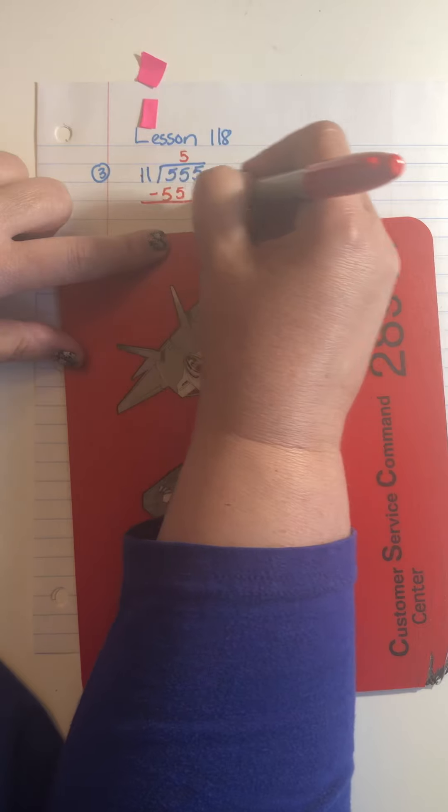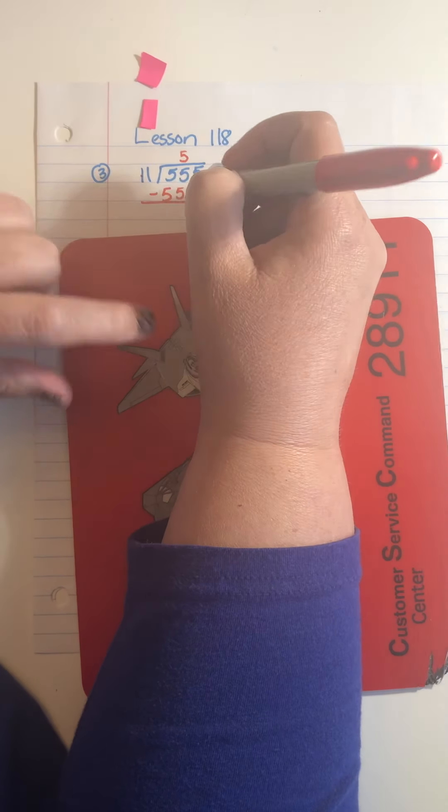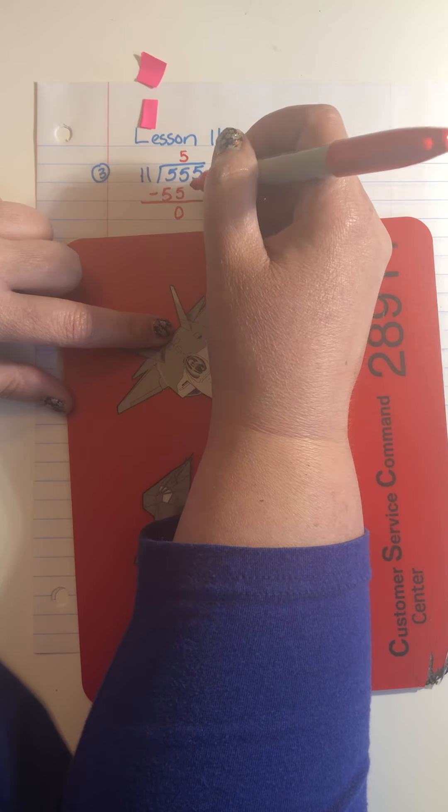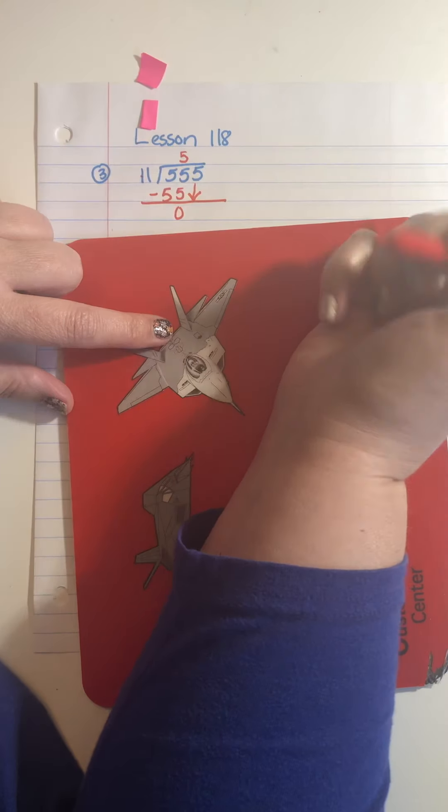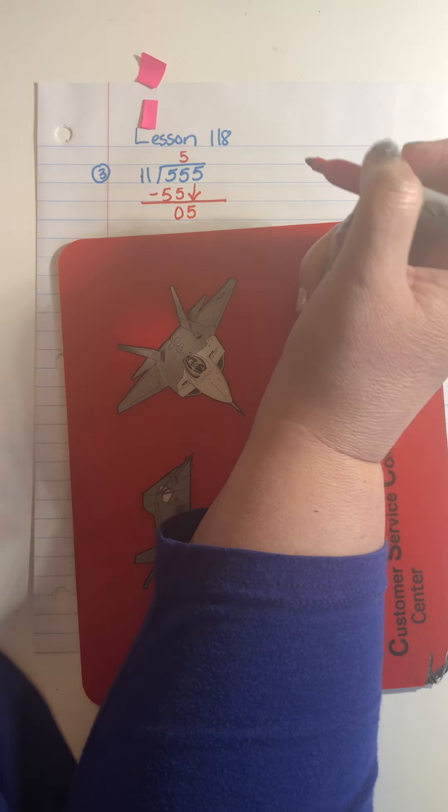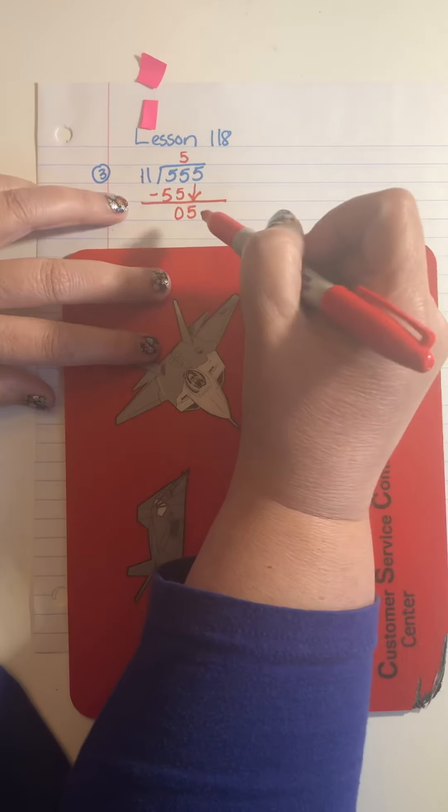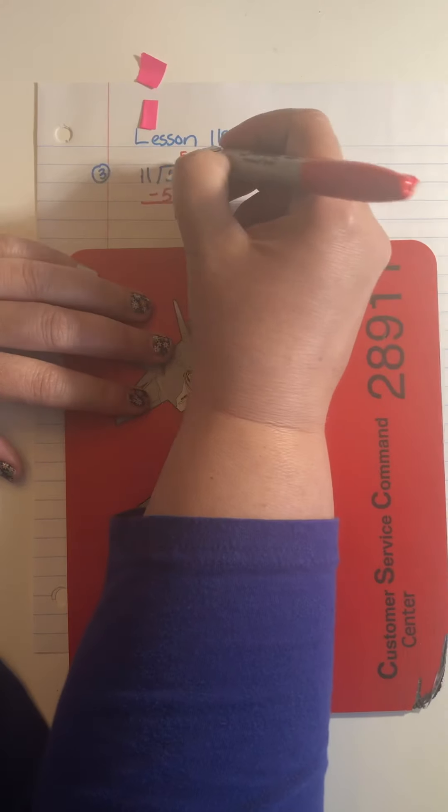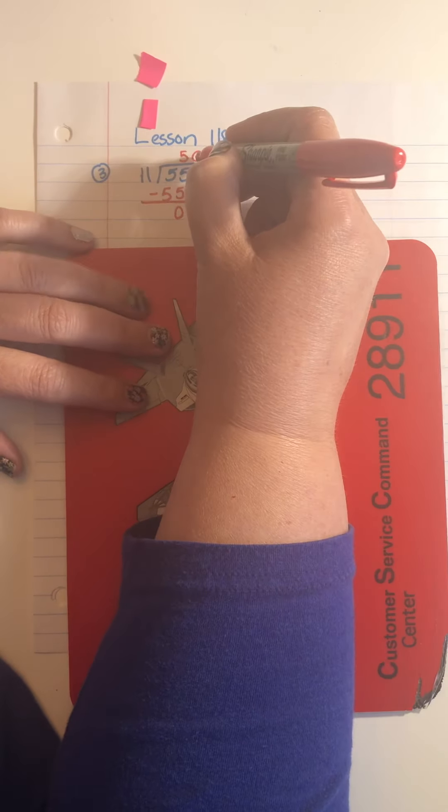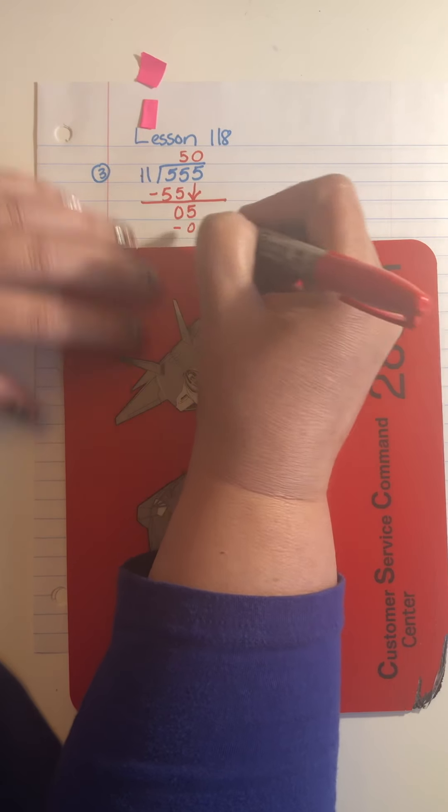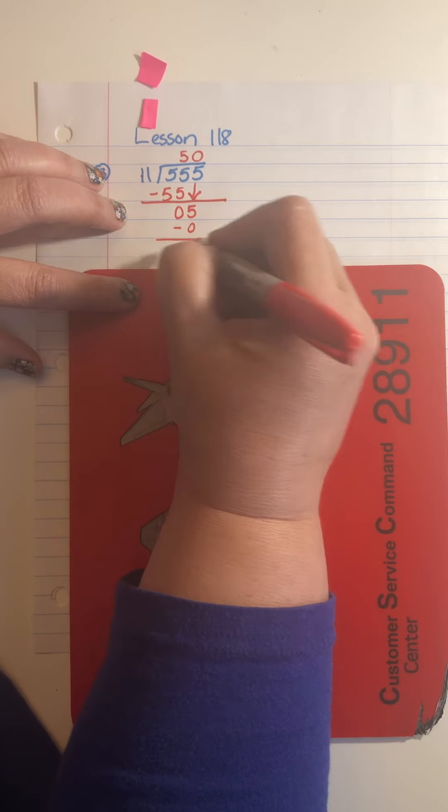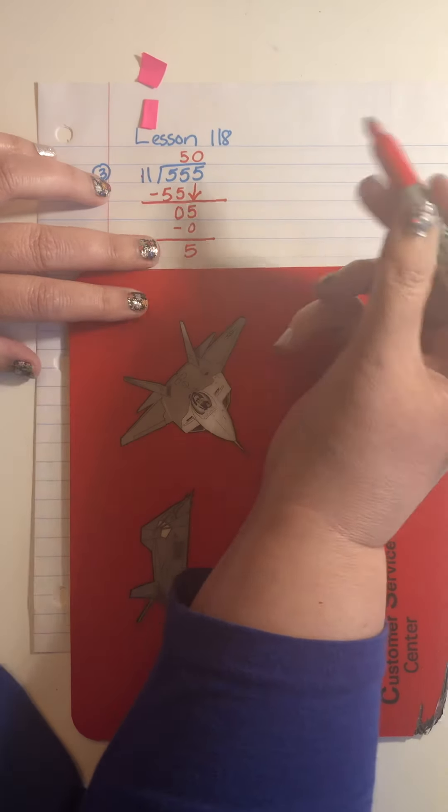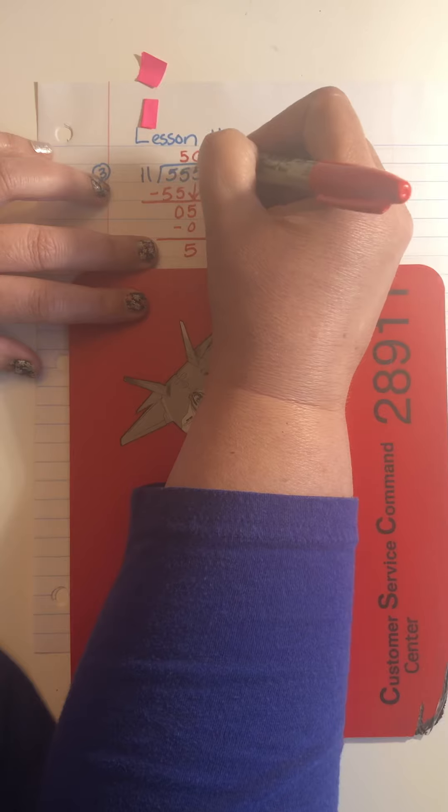So now I subtract to step 3. 5 minus 5, sorry I gave you the answer, is 0 and 5 minus 5 is 0. So my next step is to bring down. When I bring that down, I have a 5. So I start over now, back to step 1, which is division. My new division problem is 5 divided by 11, which we know to be 0 times. 0 times 11 is 0. So we subtract to step 3 and our answer after we subtract is 5. I look, I have no more digits to bring down. So 5 is my remainder.